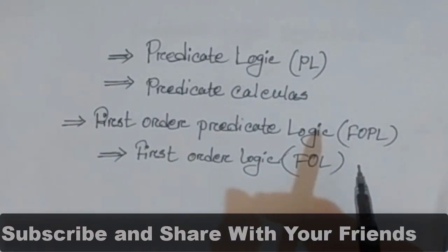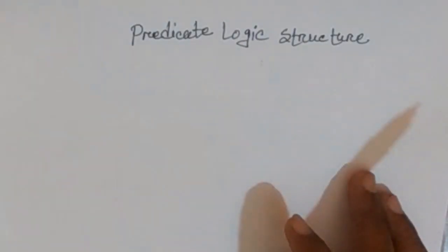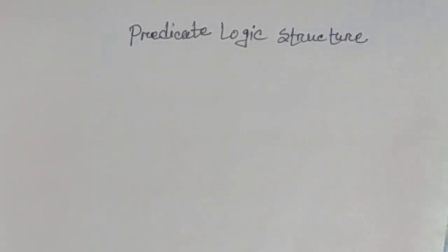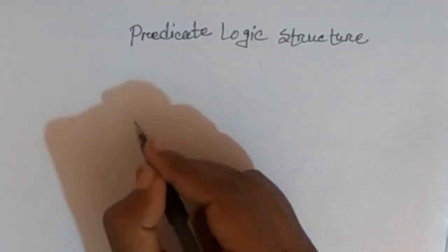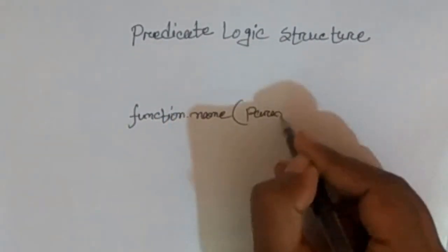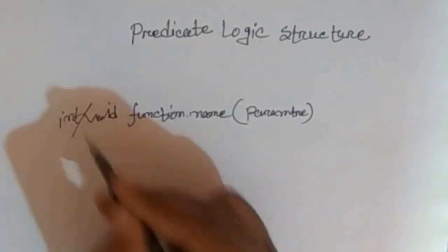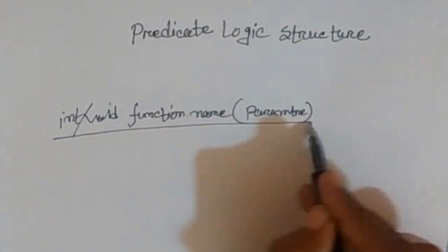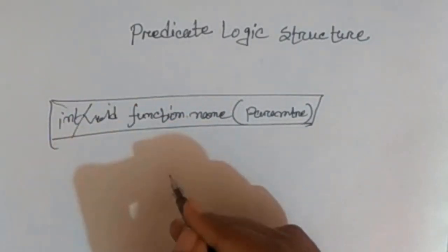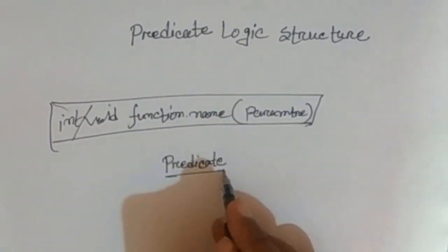If you are talking about predicate logic, we will look at its structure. I recall the programming language functional structure — I will write the function and structure. In this structure, our predicate logic structure: the predicate logic has a predicate name, similar to a function name, and it declares the sentence.